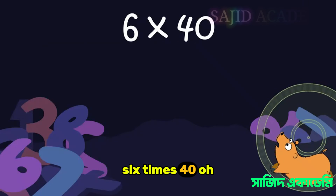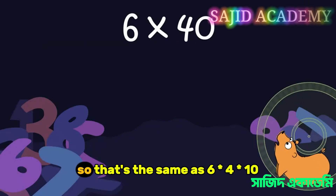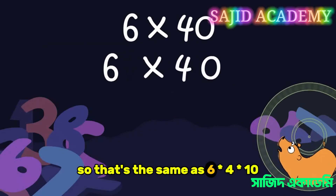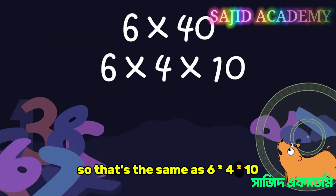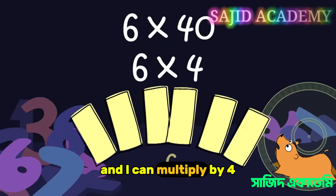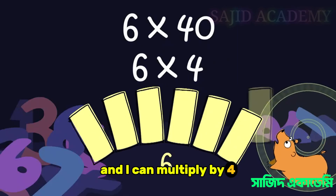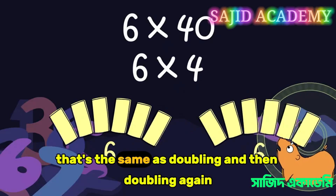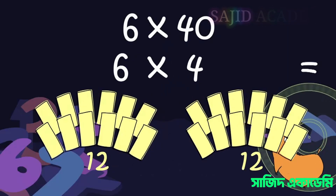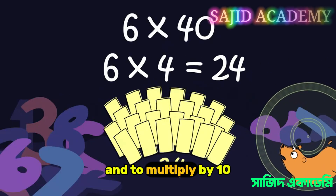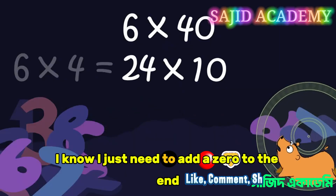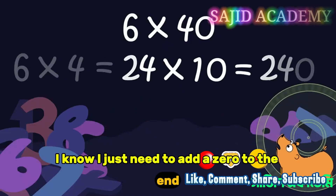Six times 40. So that's the same as six times four times ten. And I can multiply by four — that's the same as doubling, and then doubling again. And to multiply by ten, I know I just need to add a zero to the end.